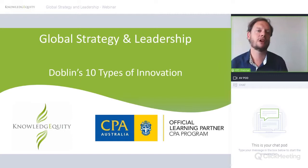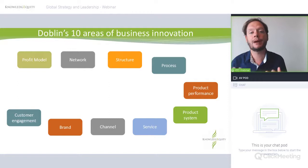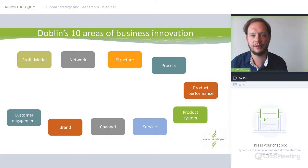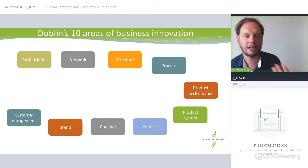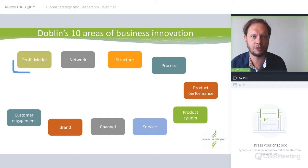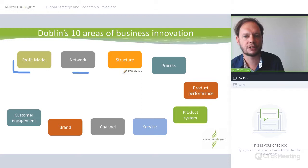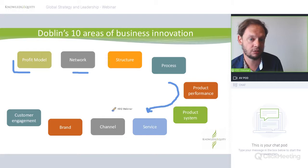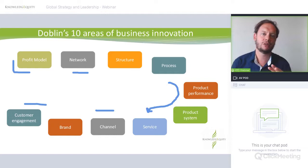Welcome to this Global Strategy and Leadership Knowledge Click about Doblin's 10 Types of Innovation, also known as Doblin's 10 Areas of Business Innovation. This was created by Larry Keighley, who with Jay Doblin came up after a lot of research about different categories that they could break up in the processes of how an organisation goes about its innovation — ranging from profit model, network, structure, process, product performance, customer service, channel, brand, and customer engagement.